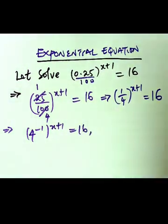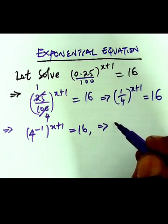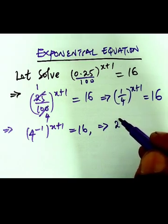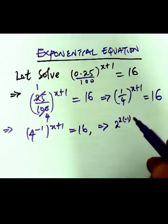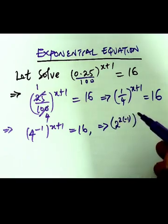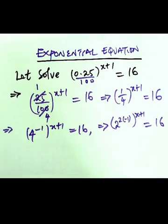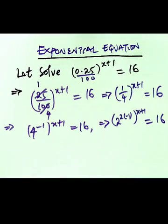From here we can continue. We can write 4 in index form again: you can have 2 to the power of 2 multiplied by 1, because we have 1 here already, into the bracket x+1, equals 16.